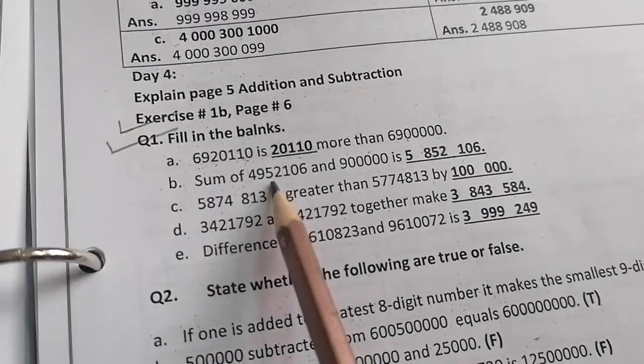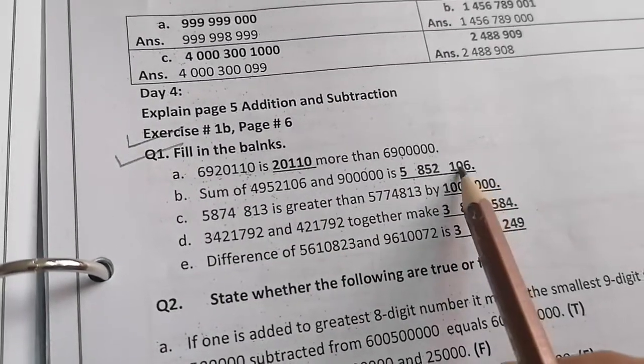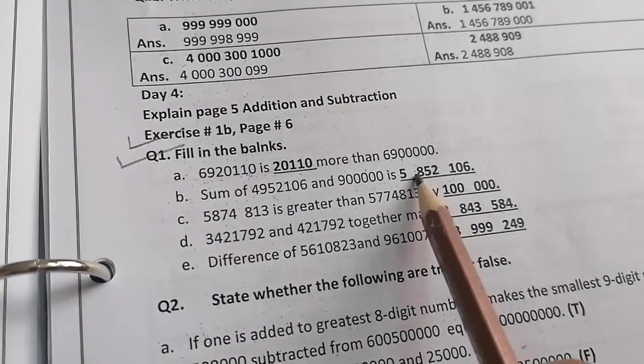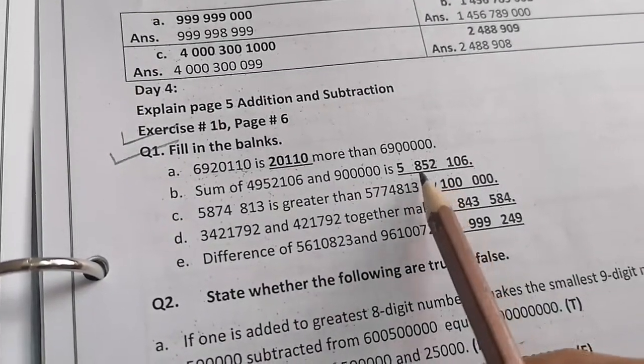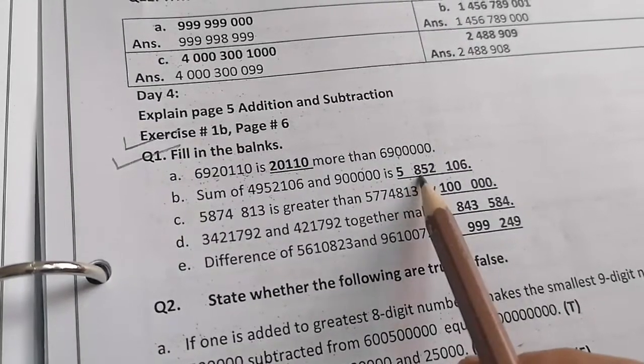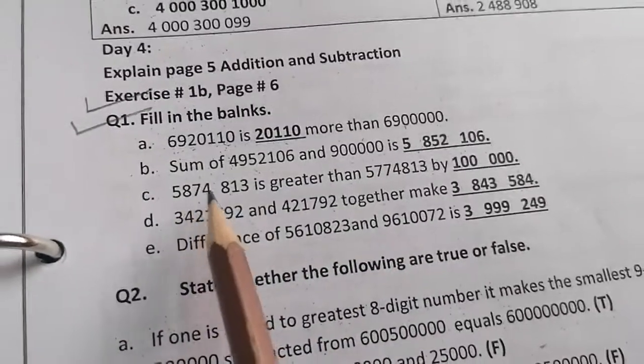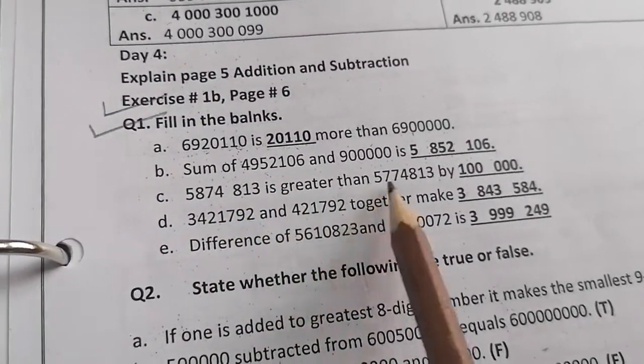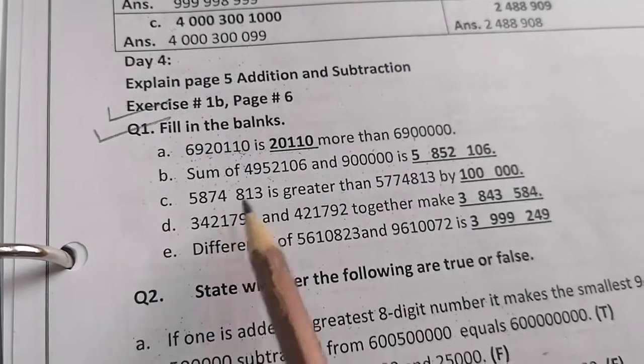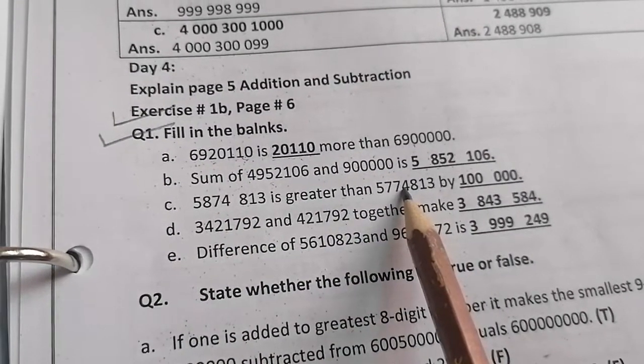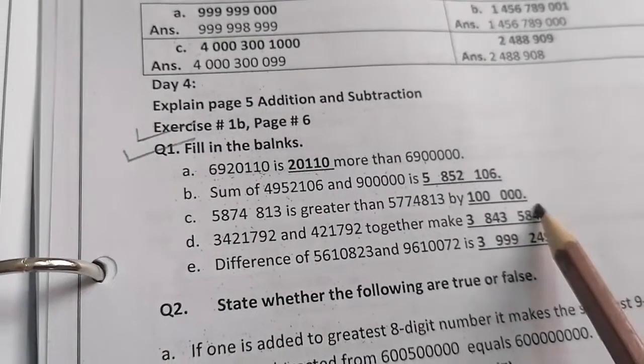Sum of this and this number is 1, 10, 100,000, 10,000, 100,000 and million: 5,085,058,052,106. The next value is greater than this by how much we will add this value to get this number? We have to add 100,000.